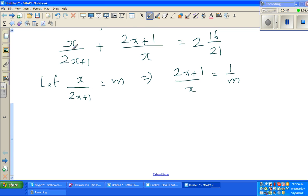So if this is m, this is the reciprocal, so it's 1 over m. So this whole equation now becomes simple as m plus 1 over m is 2 whole 16 over 21.